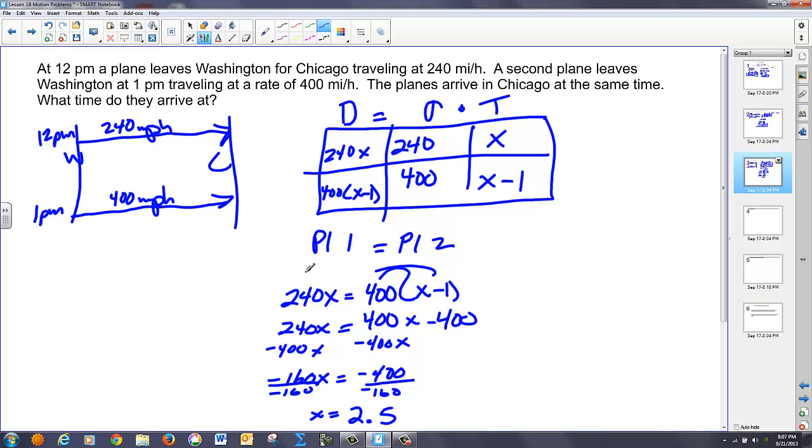But what does X represent in this case? X represents the time the slower plane traveled. So, this is 2.5 hours. And they wanted to know what time will they arrive. Well, we know that this first plane left at 12 p.m. And if the whole flight took 2.5 hours, I add 2.5 hours to 12 p.m. And I get 2:30 p.m. is when the plane arrived.